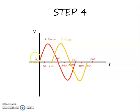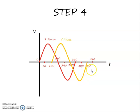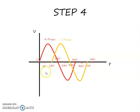The R-phase waveform started at 0 degrees. Now the Y-phase waveform starts at 120 degrees, displaced by 120 degrees from the R-phase. It goes through a positive cycle reaching the peak, then going to zero at 300 degrees, going to a negative peak, and then going back to zero at 480 degrees.